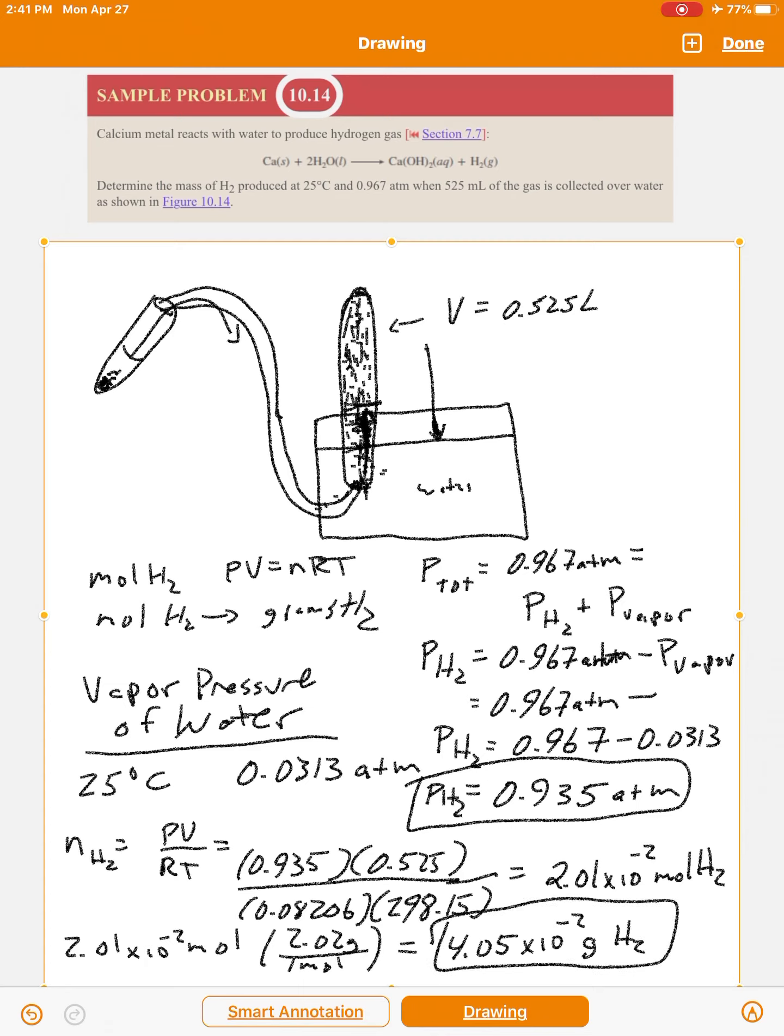Okay. So that is the collection of a gas over water. If it's collected over water, you have to subtract the vapor pressure of the water at that temperature. So if this were done at 35 degrees Celsius, we would have to look that up in a table, the vapor pressure. And it would be higher than 0.0313 atmospheres. Okay.